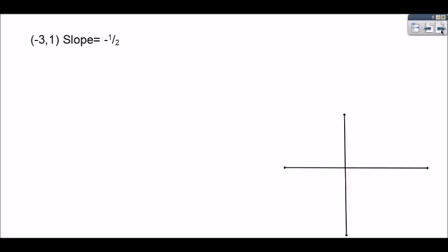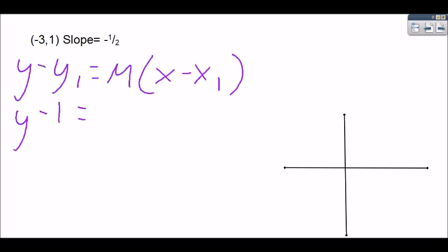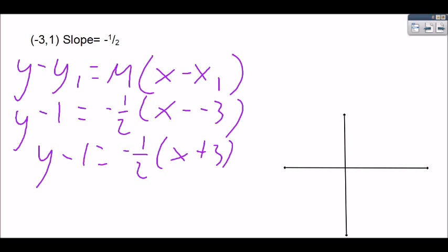Alright, when they give us a slope and a point we're going to use point slope form. And we could graph from here and just do our single point of negative 3, 1 and then the slope of down 1 over 2.